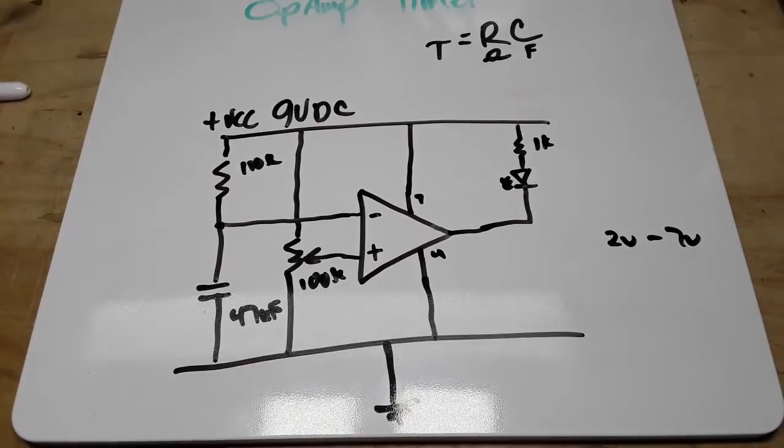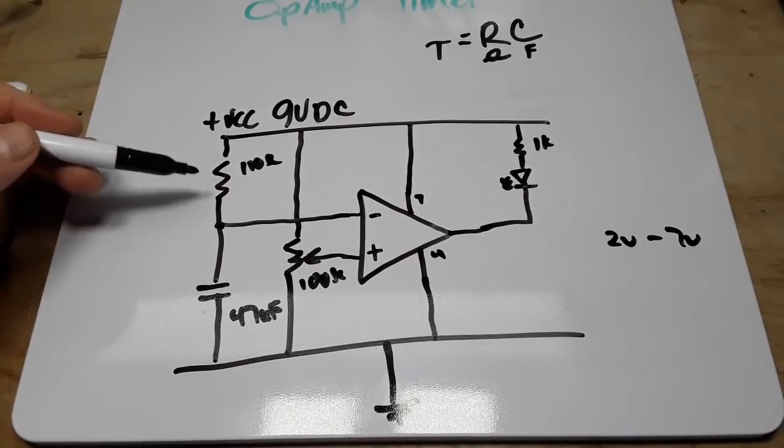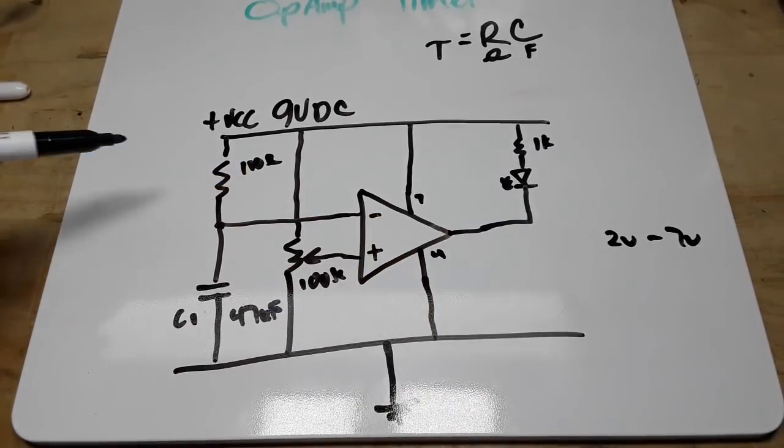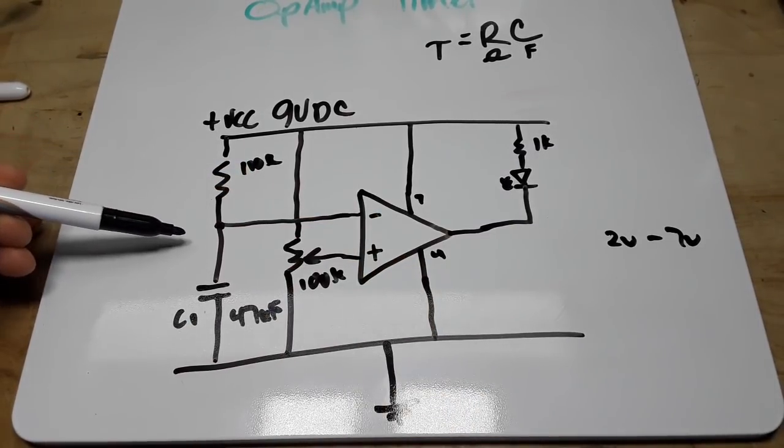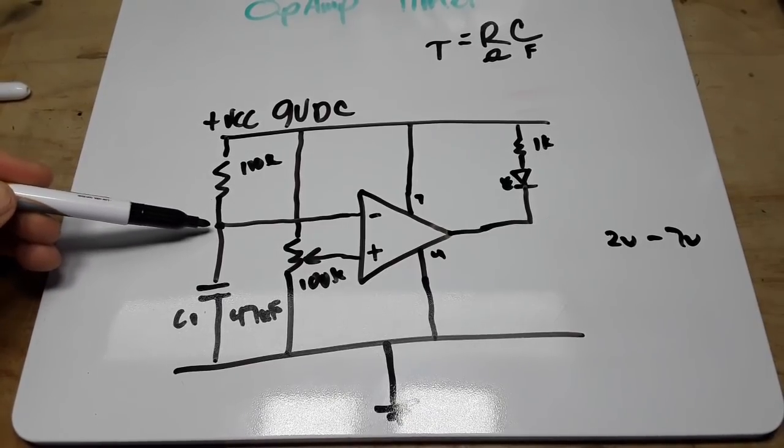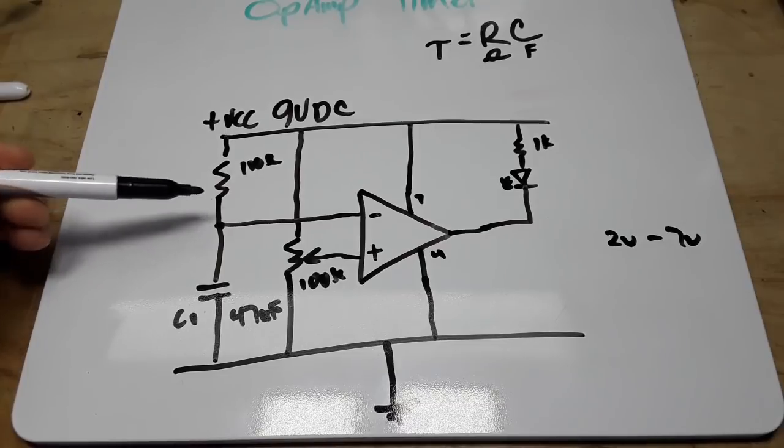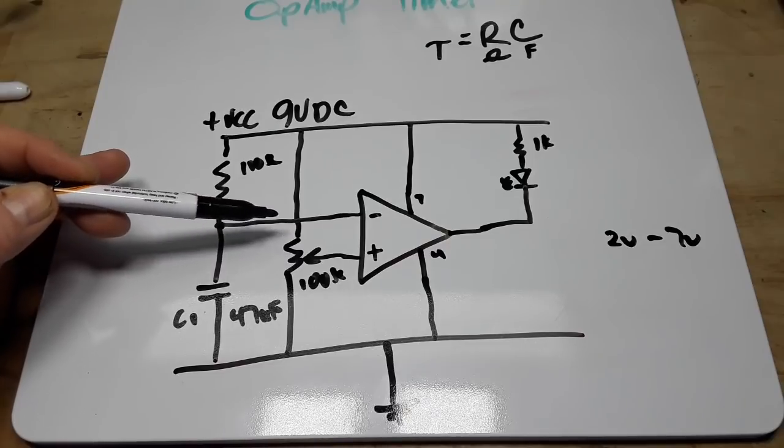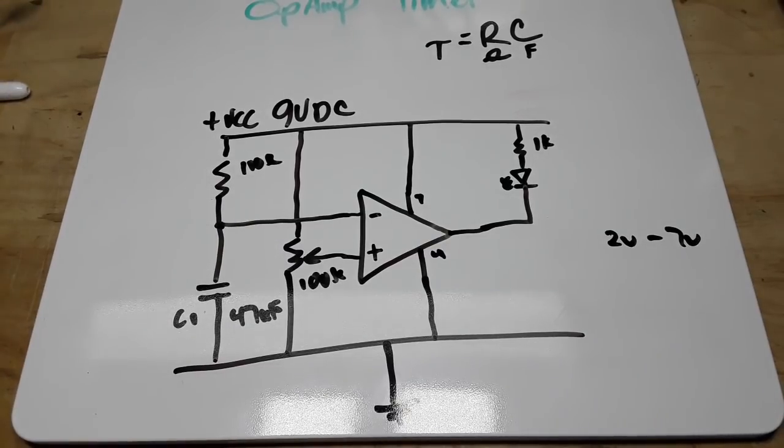So what's going to happen is when we turn on the power to this circuit, this capacitor here, we'll call it C1, is going to slowly charge through that resistor. And as it charges up, the voltage at this node right here is going to increase. Well, when it increases to a point crossing this threshold we've set here, it's going to flop the output and that LED is going to turn on. Are you all with me so far? Good. Let's set up the circuit then.